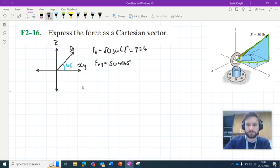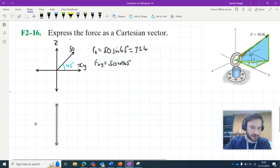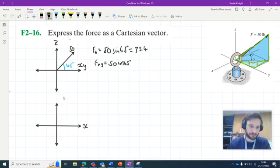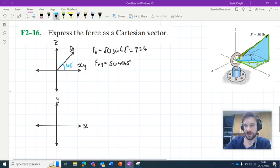Moving on then, we can consider this triangle here. So let's just draw up our axes. So we have the y axis here and the x axis here. So note that this fxy component here is acting in the negative x direction and the positive y direction.